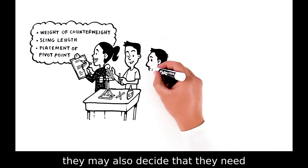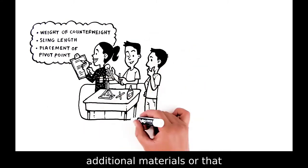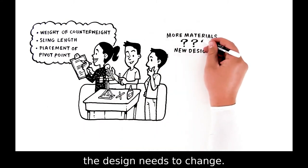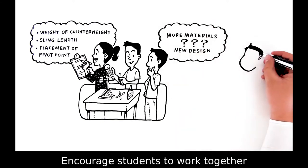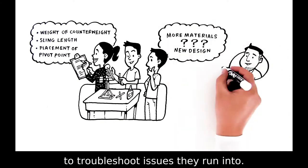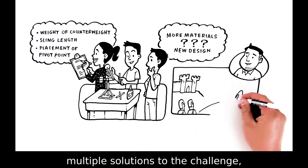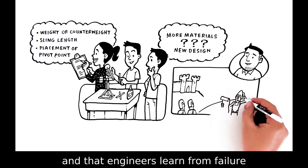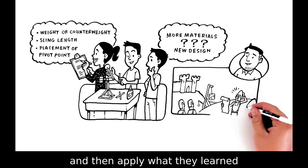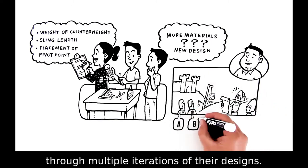During construction they may also decide that they need additional materials or that the design needs to change. Encourage students to work together to troubleshoot issues they run into. Remind students that there are multiple solutions to the challenge and that engineers learn from failure and then apply what they learned through multiple iterations of their designs.